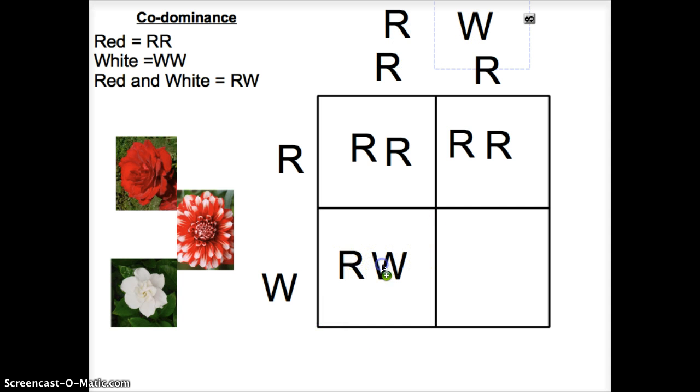You'd have 25% here would be red and white, and another 25% would be red and white. So it would make 50% that are red, 50% that are red and white. And there's other examples we can do, but I think you get the point.